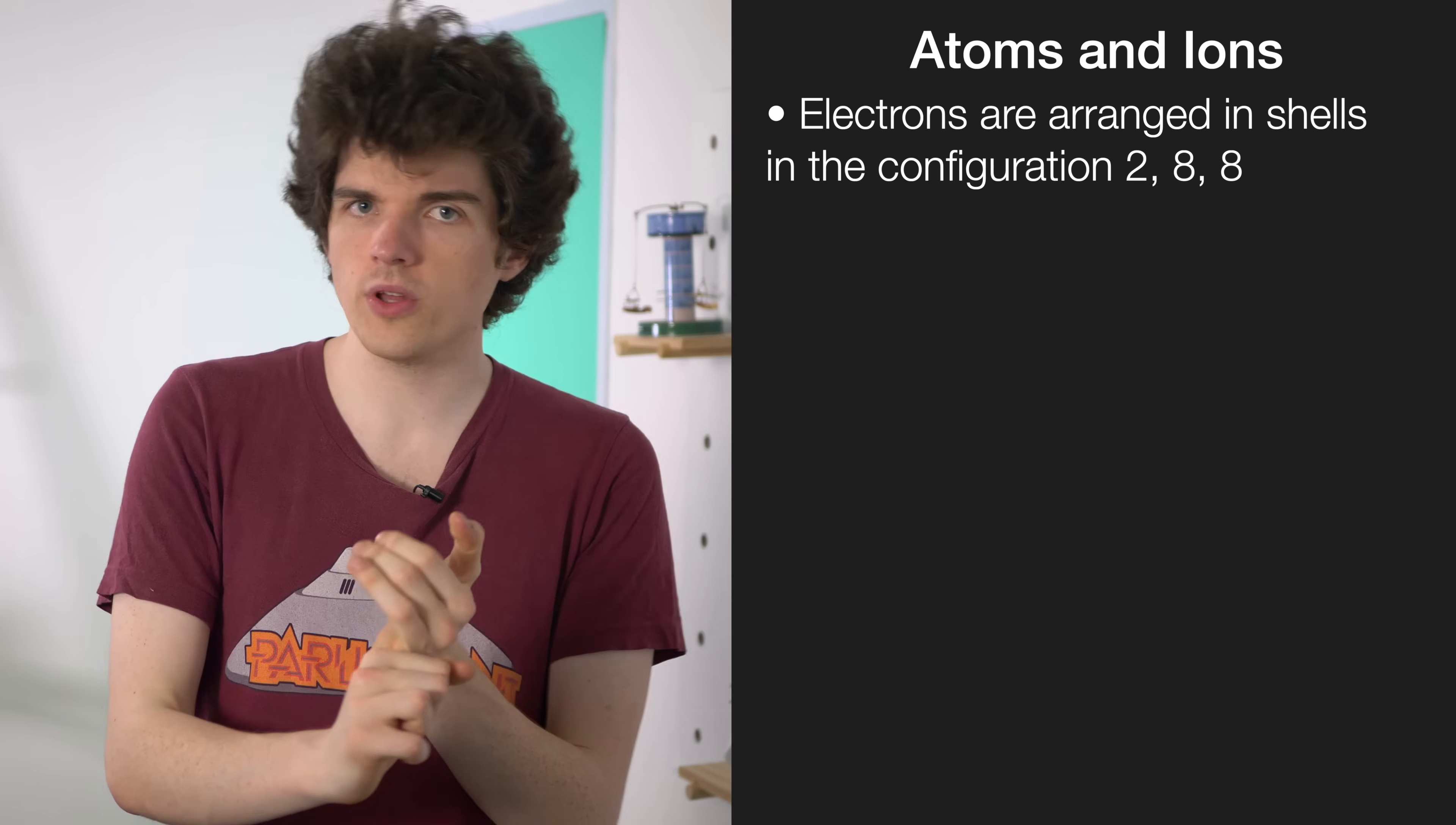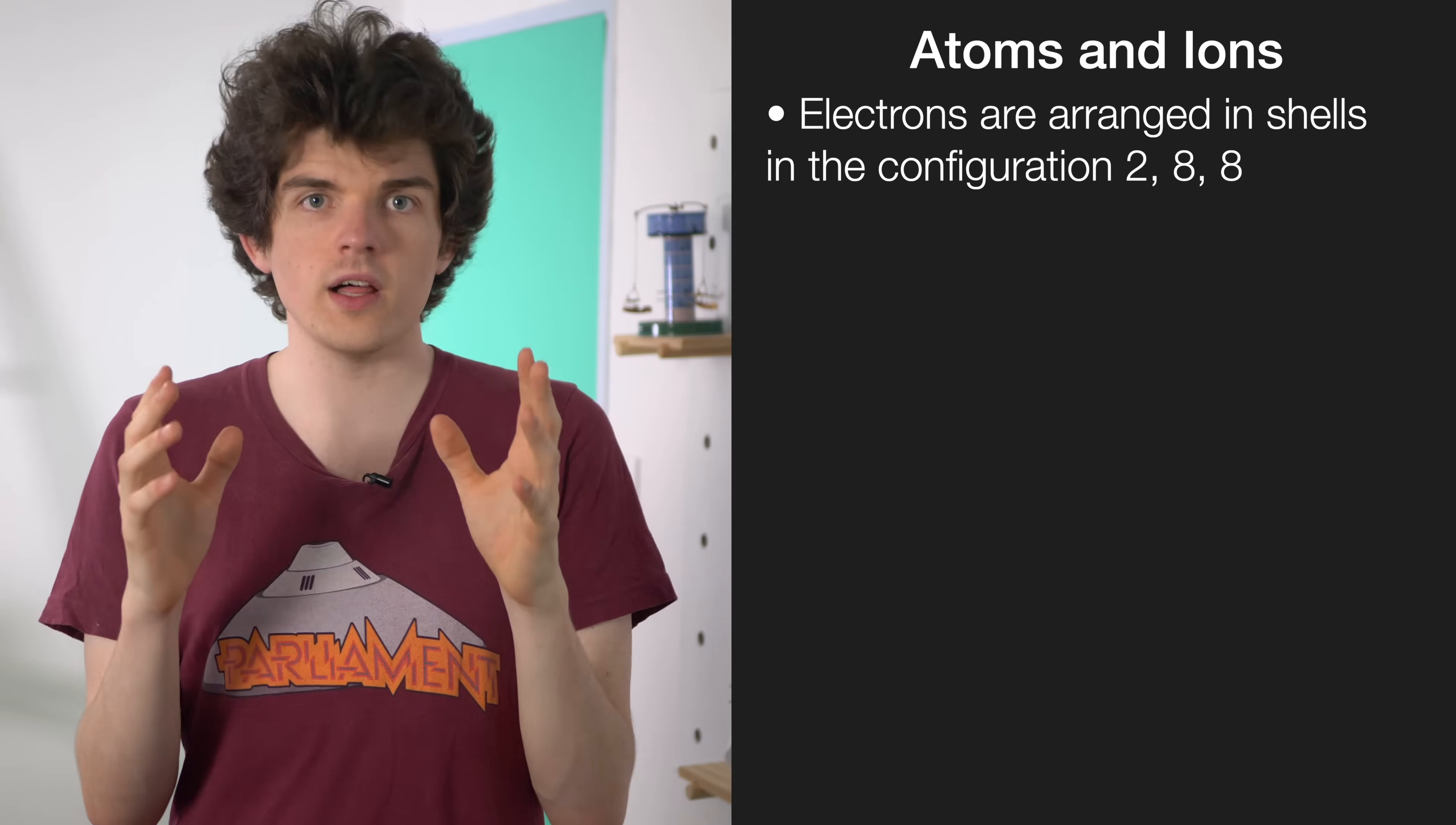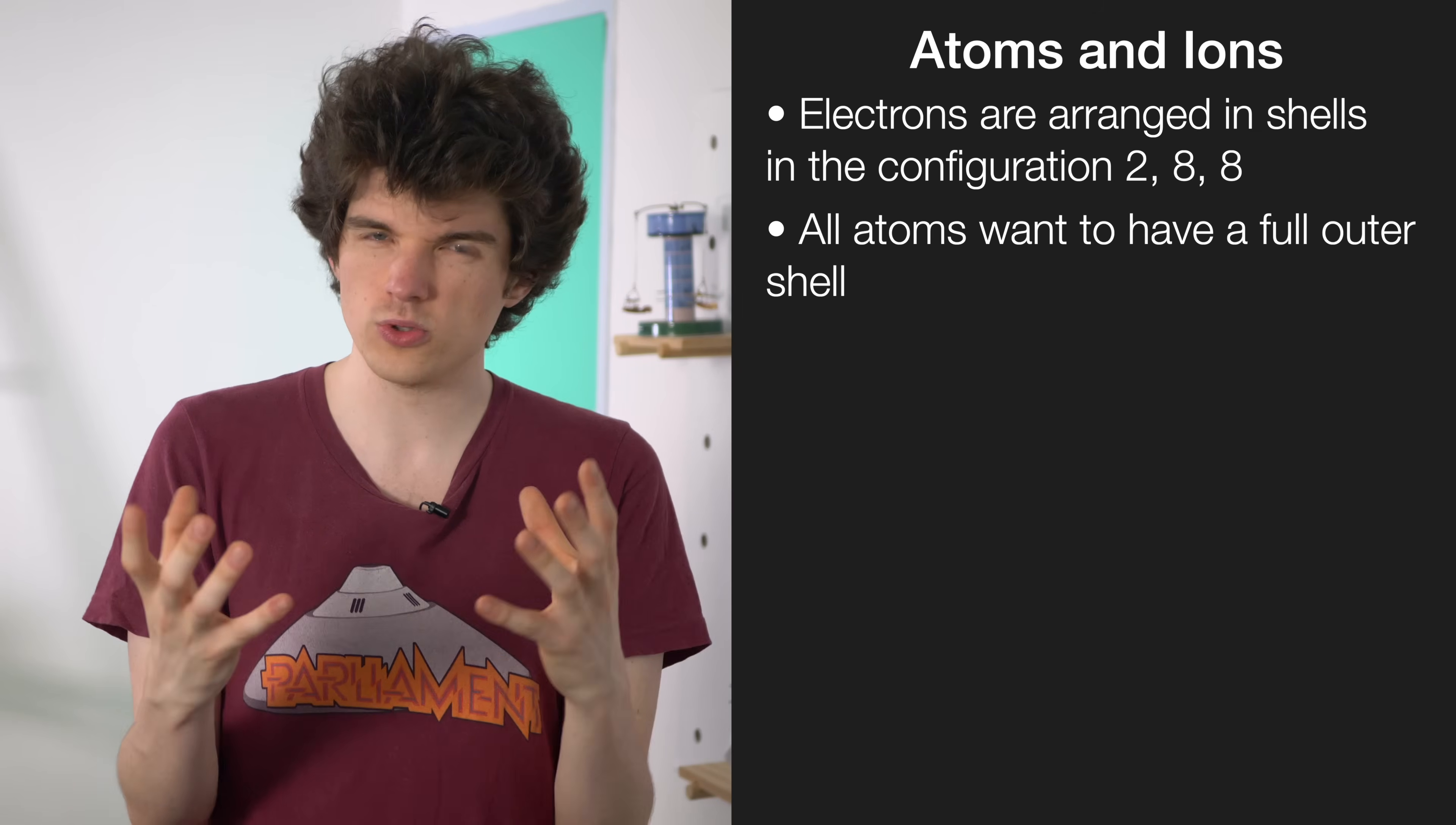One free MOE mark in the exam is going to be on why atoms form ions and why ions are charged particles. Electrons are arranged in shells with two in the first shell, eight in the second shell, and eight in the third shell. Full electron shells are really stable, and so all atoms want to get to that full shell stability.